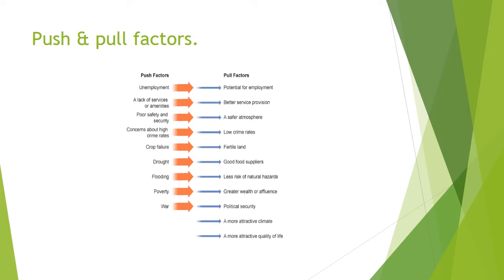Here are examples of how push and pull factors interrelate. If there is a lot of unemployment in one area, the person from that area will migrate somewhere with good employment — they are pushed from one area and pulled toward another. Similarly, if an area has no services or amenities, the person will be repelled and attracted to areas with better service provision. Poor safety and security push people toward safer atmospheres, and concern about high crime rates pushes people toward low crime rate areas.